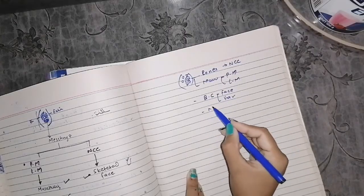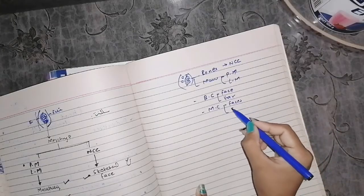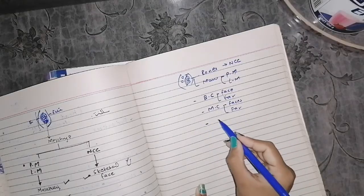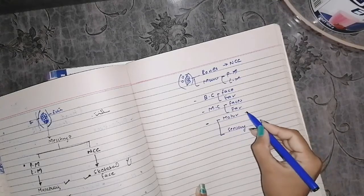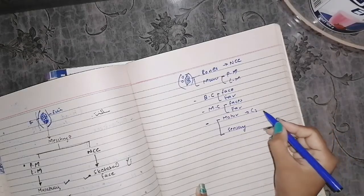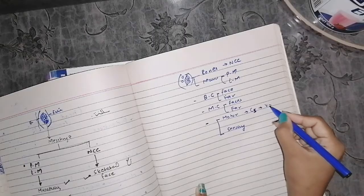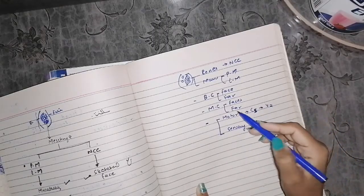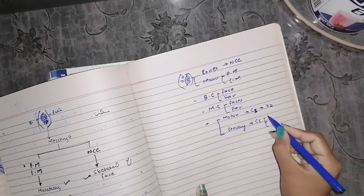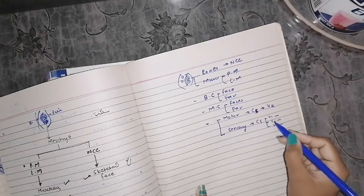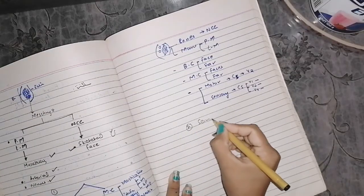To recap: the muscular component of the first arch included face-related muscles — the muscles of mastication and the anterior belly of the digastric — as well as ear-related muscles: tensor tympani and tensor palatini. The nerve supply of the first pharyngeal arch is divided into motor and sensory. The motor supply is provided by the fifth cranial nerve (trigeminal). The sensory supply is provided by all three branches of the trigeminal nerve: V1 (ophthalmic), V2 (maxillary), and V3 (mandibular).